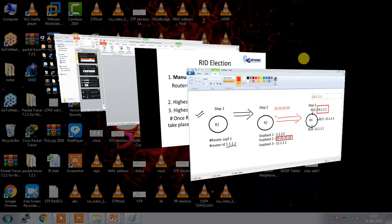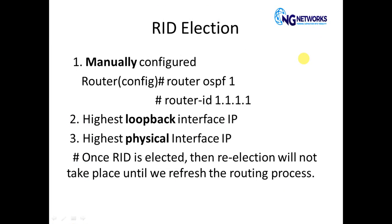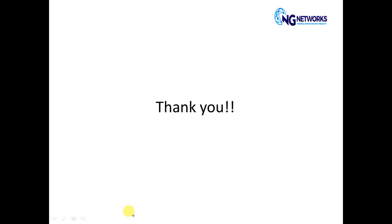This is how the router ID election takes place. Note the last important point: once the router ID is elected, re-election will not take place until we refresh the routing process. Even if a higher loopback IP comes onto the router, the router ID election will not take place again. If you want to redo the election, you have to clear the routing process. Thank you for watching — I hope the router ID election is clear to you.